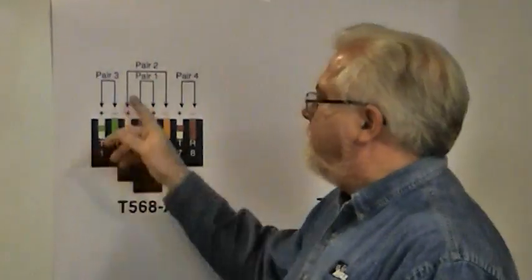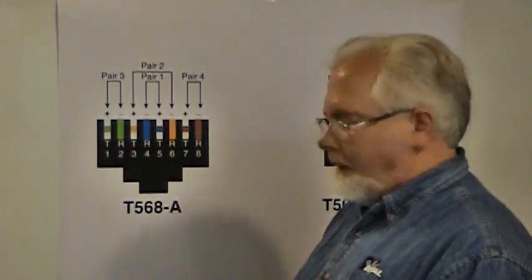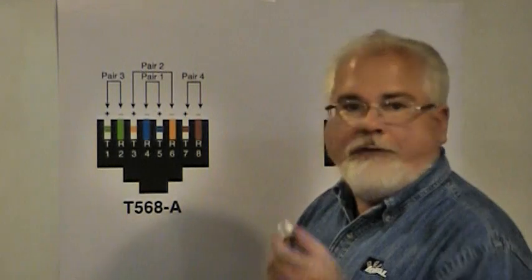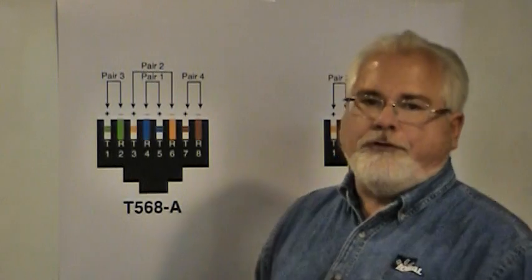As we said a minute ago, with 10 and 100BaseT data networks, they're using pairs 2 and 3 here. So the jack could be used for phone or could be used for data. That's why we really like it for residential applications. As a matter of fact, the residential application calls out wiring in A because we like that versatility.